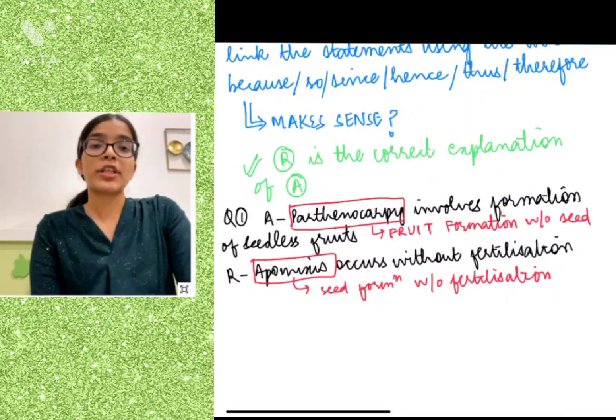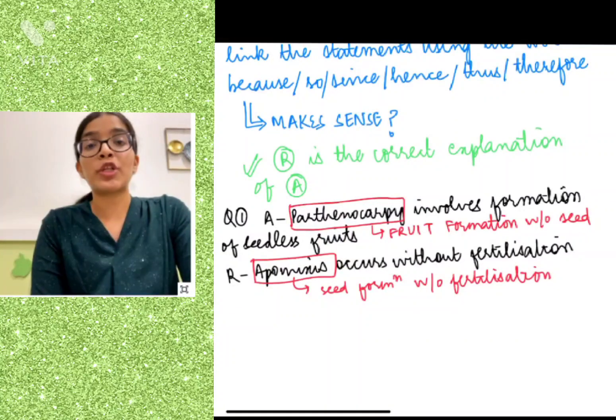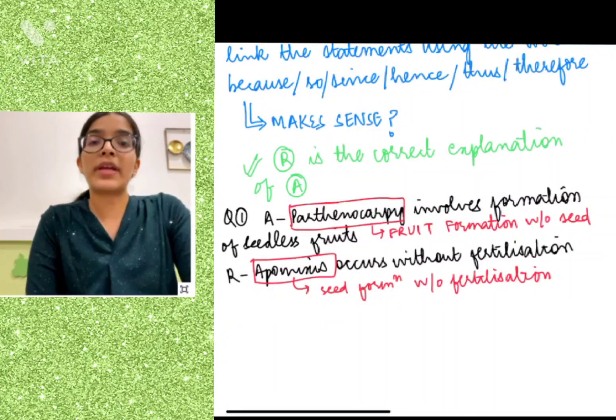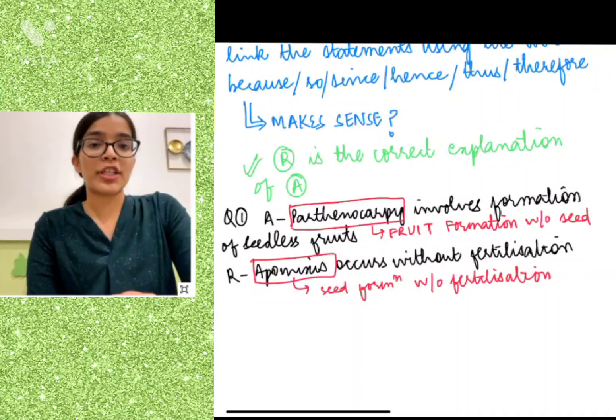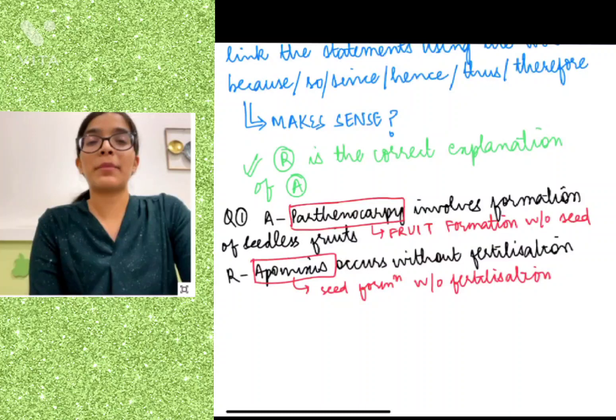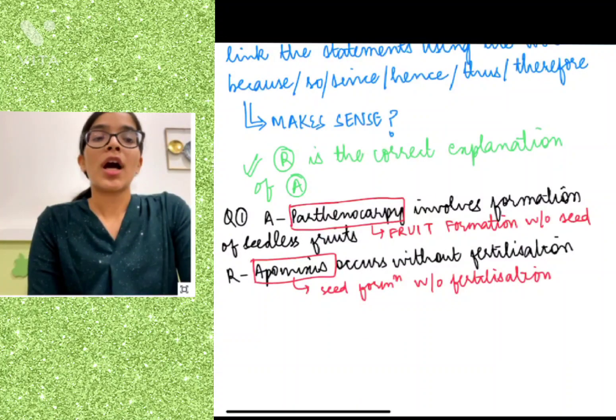I would like to tell you that assertion-reason questions are the kind of questions that you need to practice a lot, and then they will be very simple for you to solve once you get the hang of it. Of course, there are some assertion-reason questions where deciding between option A and B can be a little tricky, but these tips can be used there and you can narrow down to one option.